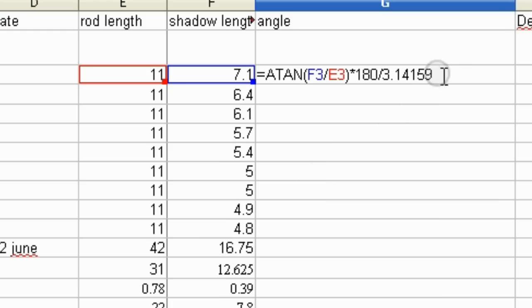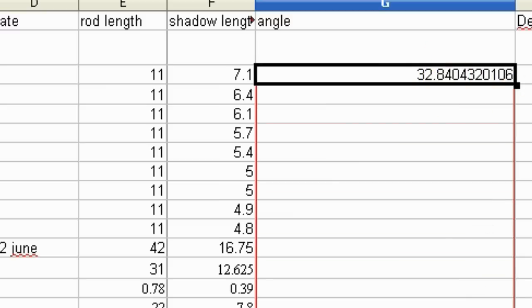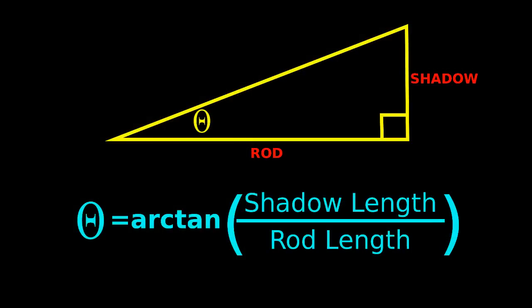The function is preferable when dealing with a lot of data because a spreadsheet can do all the calculations instantly. So the angle theta is equal to the arctan of the shadow length over the rod length.